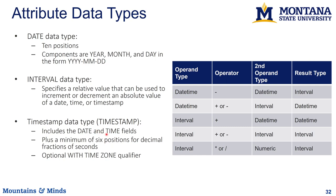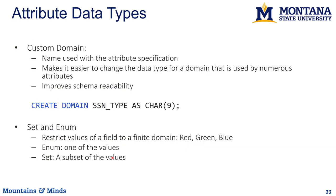You can also define custom domains — for example, an SSN type that always contains nine characters. You can use enumerations where a field has one of a fixed set of values, or sets where a field can hold a subset of those values — for example, red and green.